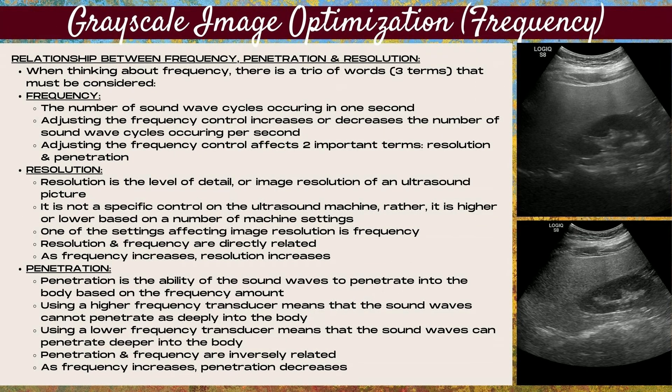When thinking about frequency, there is a trio of terms that must be considered. The first term is frequency — the number of sound wave cycles occurring in one second. Adjusting the frequency control increases or decreases this number, and frequency can be adjusted either by the frequency control or by selecting a higher or lower frequency transducer. Adjusting the frequency control affects two important concepts: resolution and penetration.